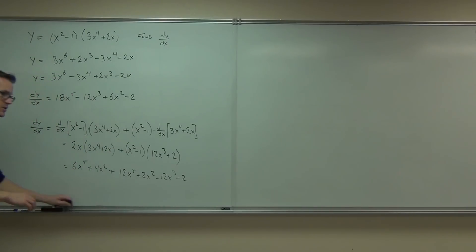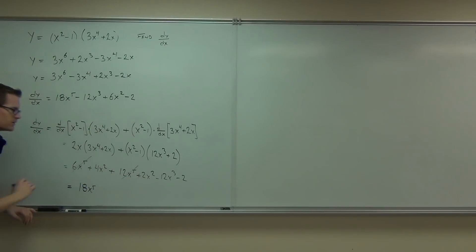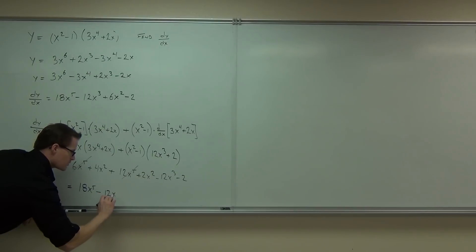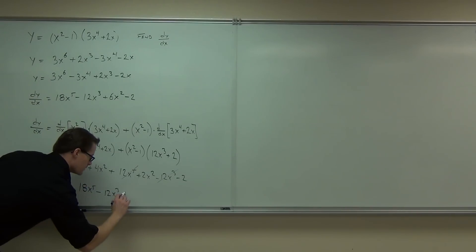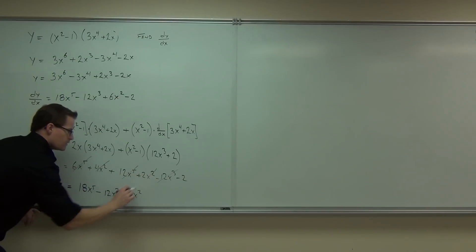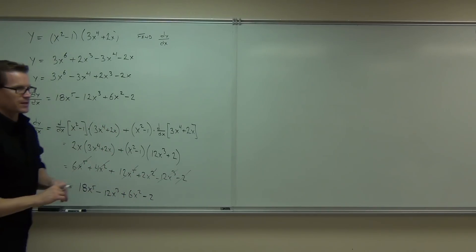Now if we do combine some like terms, I see 18x⁵. I see 12x³ minus 12x³. I see 6x². I have a minus 2.